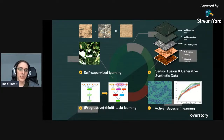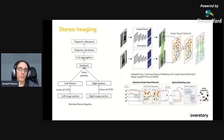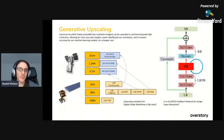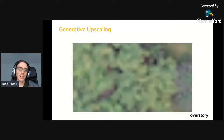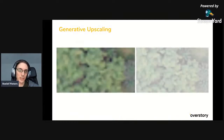On the research side, we do a lot of self-supervised learning — with unlabeled data we do smart tricks on loss functions to create semi-labels. We do multi-task learning, active learning to label less data by only labeling absolutely needed data, and sensor fusion to synthesize and upscale data. For generative upscaling, we take low-resolution imagery — for instance 15-meter resolution — and upscale it to 30-centimeter resolution. This image slowly gets turned into a more precise image, and comparing them you can definitely see the difference — you can see individual tree species like palms that weren't distinguishable before.